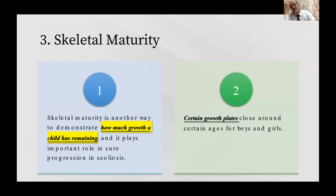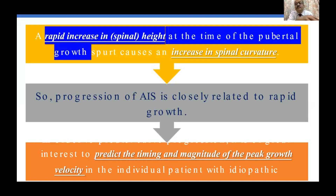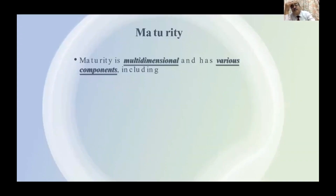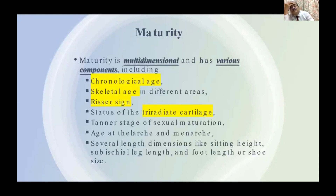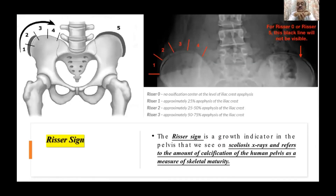Skeletal maturity is the third factor, indicating how much growth a child has remaining. Rapid increase in spinal height during the pubertal growth spurt causes an increase in spinal curvature, so progression of adolescent idiopathic scoliosis is closely related to rapid growth. Maturity is multi-dimensional and includes chronological age, skeletal age, Risser sign, status of triradiate cartilage, and Tanner stage. The most important is the Risser sign, which is the calcification of the iliac wing apophysis, graded from 1 to 5.